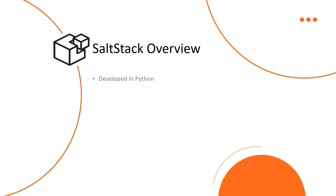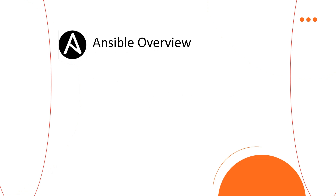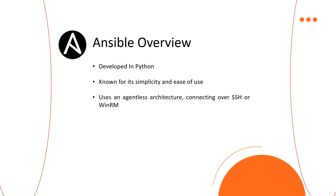SaltStack is developed in Python. It is designed for high-speed, event-driven IT automation, and it uses a master-minion architecture, but supports a masterless mode as well. Ansible is also developed in Python. It is known for its simplicity and ease of use, and it uses an agentless architecture, connecting over SSH or WinRM.